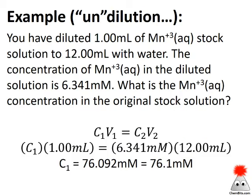All right, let's take one more look at an example. This is an undilution, so we're kind of going in the other direction. You have diluted one milliliter of manganese-3+ aqueous stock solution to 12 milliliters with water. The concentration of manganese-3+ in the diluted solution is 6.341 millimolar. What is the manganese-3+ concentration in the original stock solution? Now again, this is going the other way. It doesn't matter what direction we go. It doesn't matter what we call one and two as long as we keep them together.